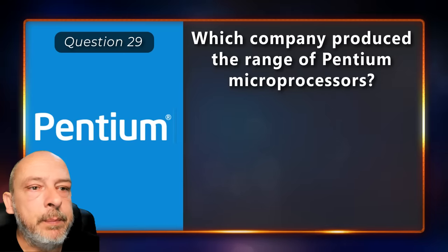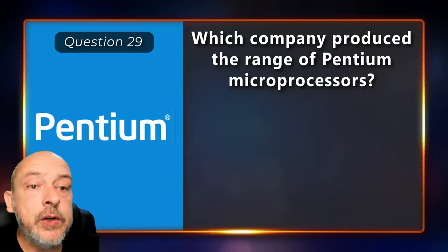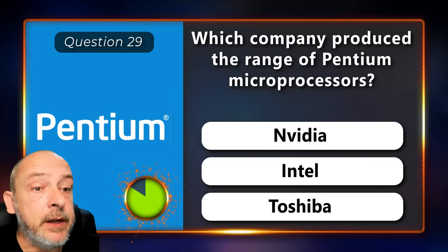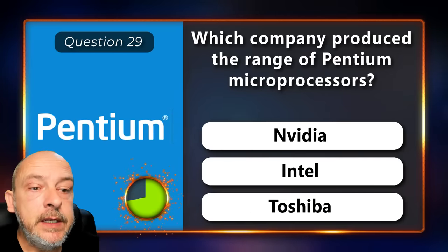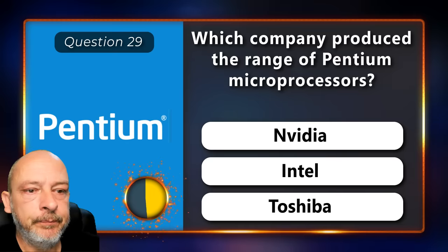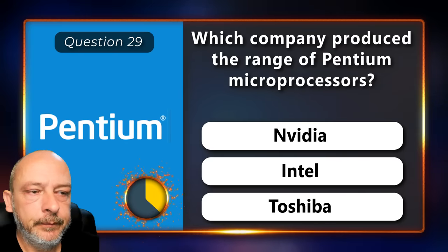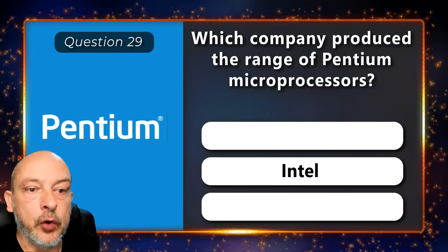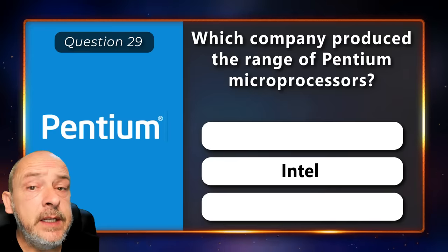Which company produced the range of Pentium microprocessors — Nvidia, Intel, or Toshiba? The correct answer is Intel.